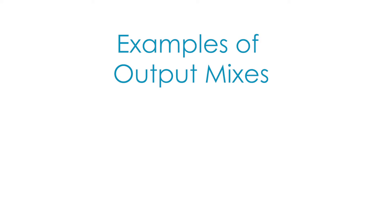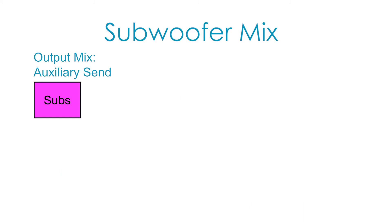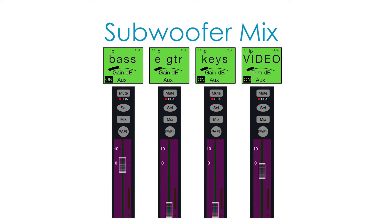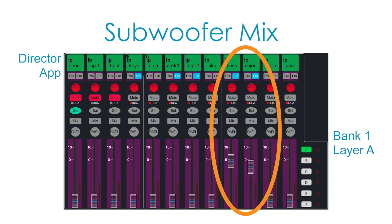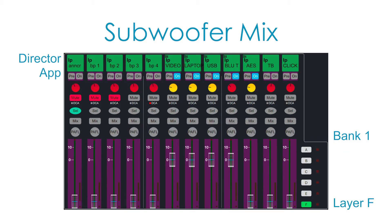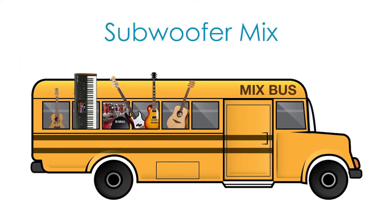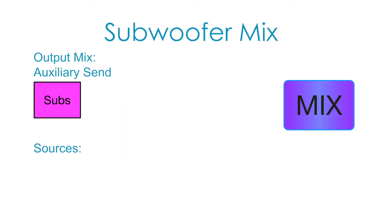Here are some examples of how mixes are assembled on the DLive system, starting with the subwoofer mix. The output mix type is an auxiliary send. Press the blue mix button on the channel strip for the subs, and you will see the faders corresponding to that mix move into place. Select layer A on bank one to see which faders are up and turned on for the subwoofer mix. Select layer F on bank one to see additional faders included in the mix. Any channel that has its faders up will be included in the mix and routed to the subwoofers. The audio sources for this mix originate from the stage and front of house.